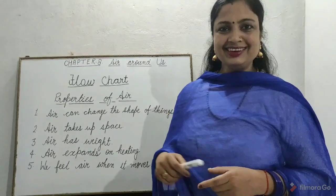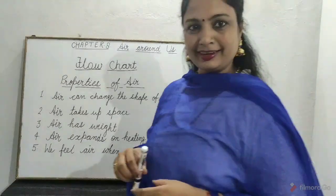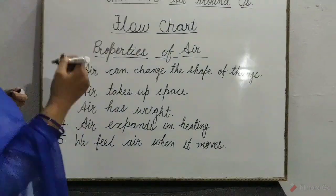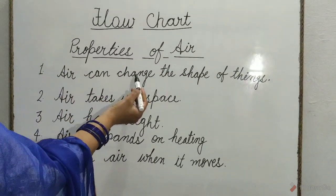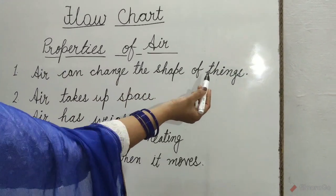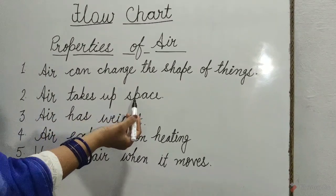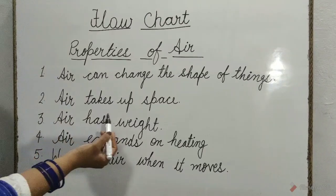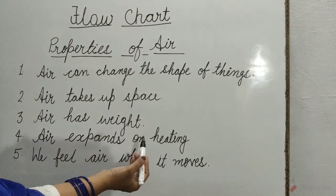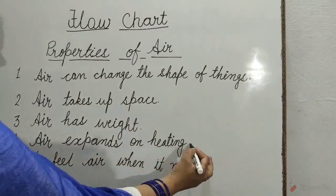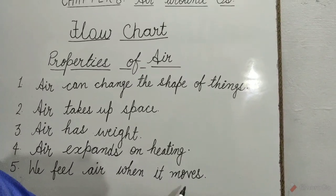Children, here is a flowchart that shows you the properties of air. Properties of air: 1. Air can change the shape of things. 2. Air takes up space. 3. Air has weight. 4. Air expands on heating. 5. We feel air when it moves.